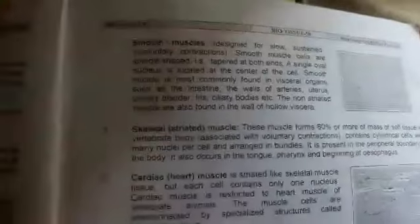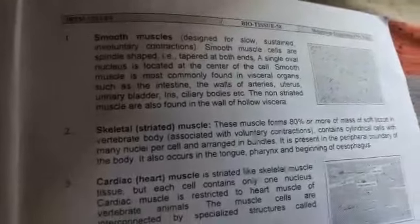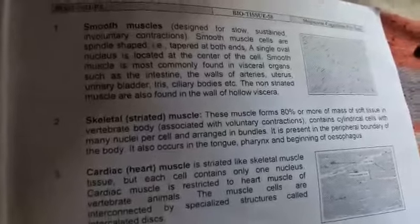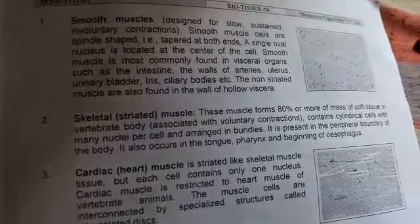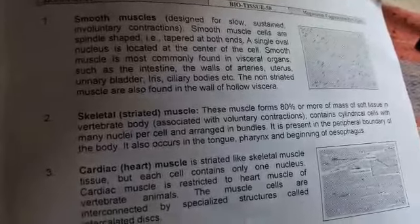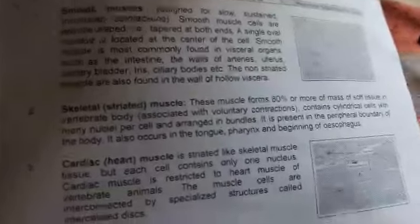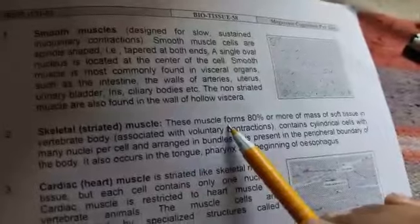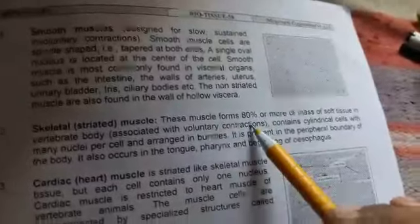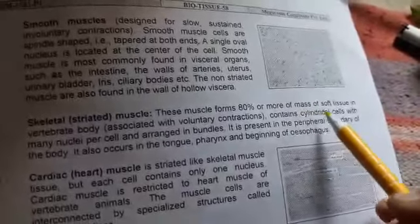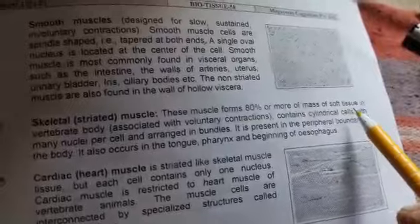Yeh raha smooth muscles. Now the second point is skeletal striated muscle. These muscles form 80% or more of the mass of soft tissue.